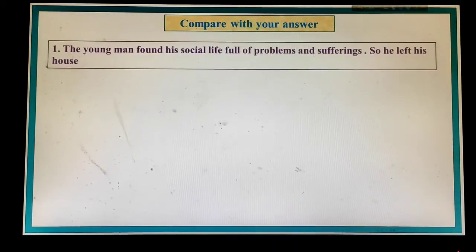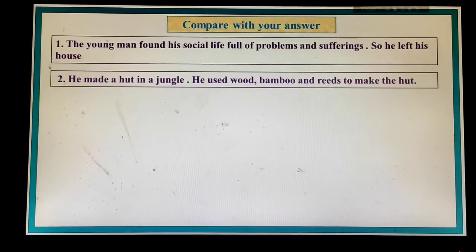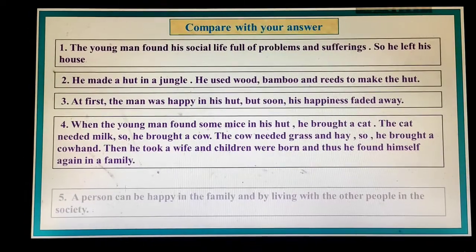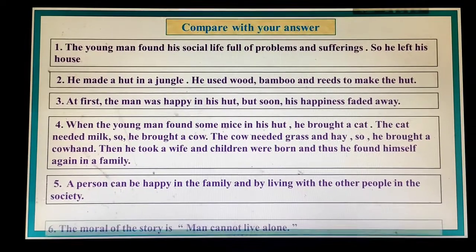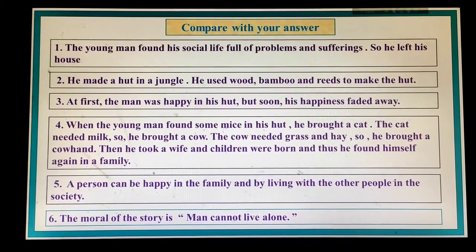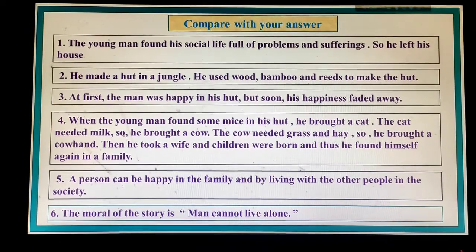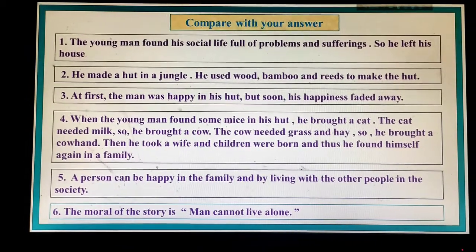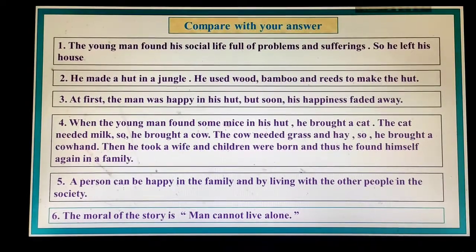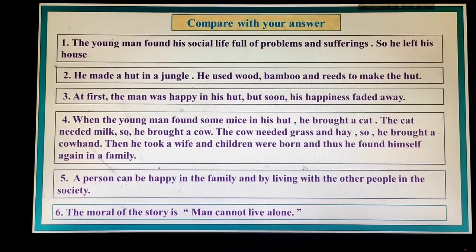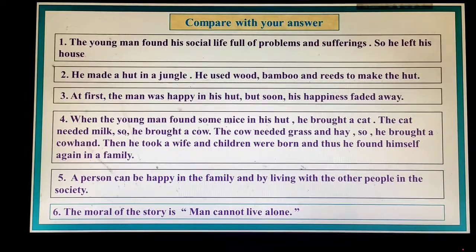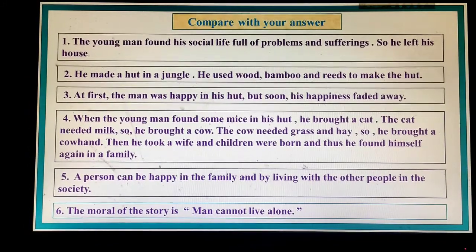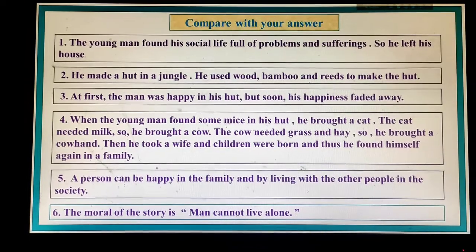Now compare with your answers. The young man found his social life full of problems and sufferings, so he left his house. He made a hut in the jungle. He used wood, bamboo and reeds to make the hut. At first the man was happy in his hut, but soon his happiness faded away. When he found some mice in his hut, he brought a cat. The cat needed milk, so he brought a cow. The cow needed grass and hay, so he brought a cowherd. Then he took a wife and children were born, and thus he found himself again in a family.